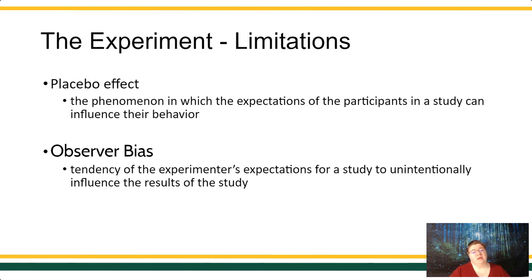The other problem that we can have in a between-groups design is this idea of an observer bias, which means that when you tell a researcher to look for a particular thing, they may be more likely to see that. And they could unintentionally influence the results of the study. So it could be that their observations themselves were also biased.